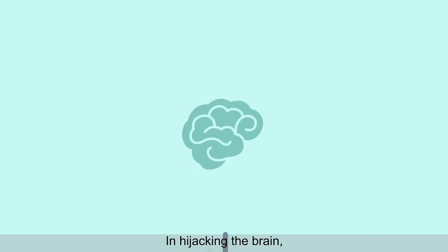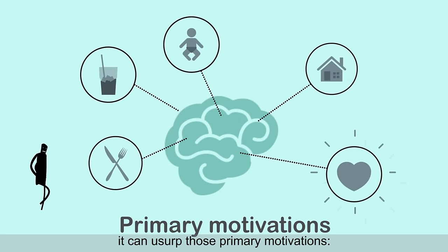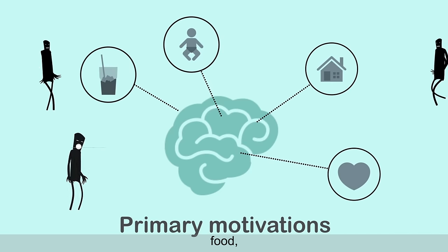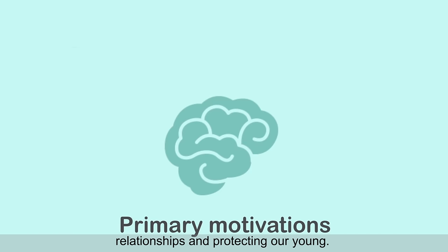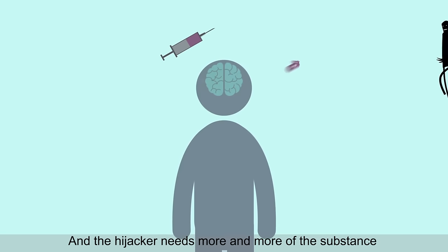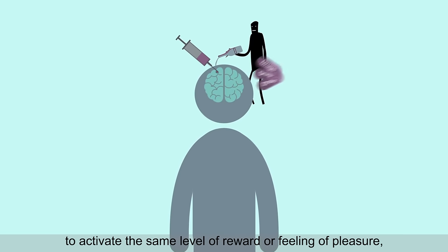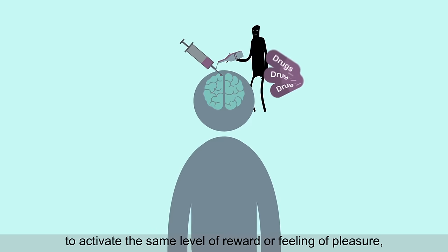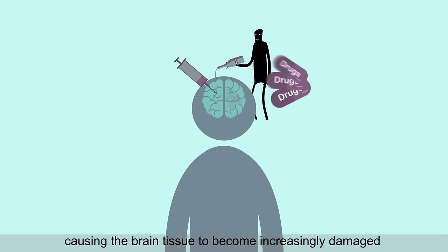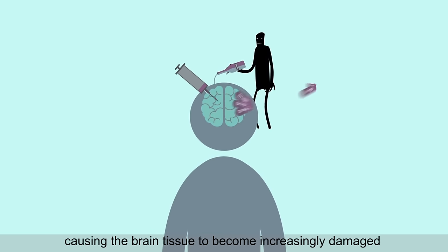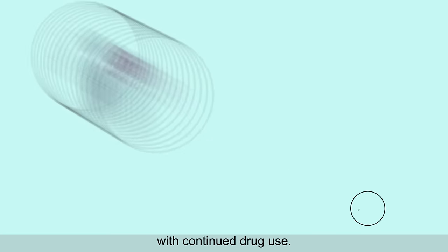In hijacking the brain, it can usurp those primary motivations — food, water, shelter, relationships, and protecting our young. And the hijacker needs more and more of the substance to activate the same level of reward or feeling of pleasure, causing the brain tissue to become increasingly damaged with continued drug use.